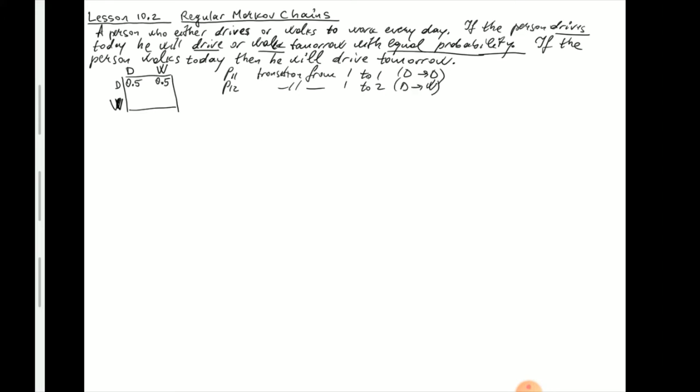Pay attention to the second row: if the person walks today, they will definitely drive tomorrow. There is no other possibility, so the probability of driving is one and walking is zero. The sum of elements on each row should equal one. So the transition matrix P is: [0.5, 0.5; 1, 0].